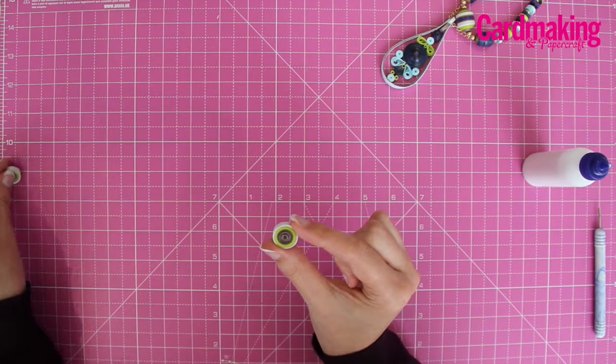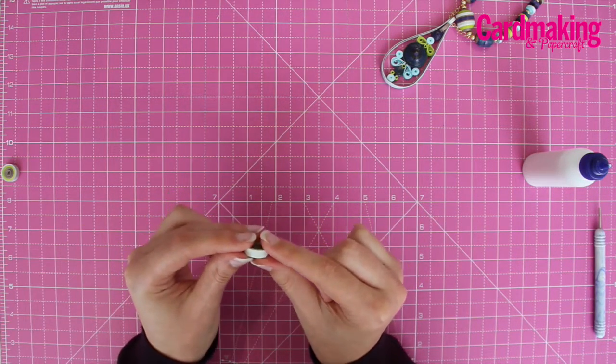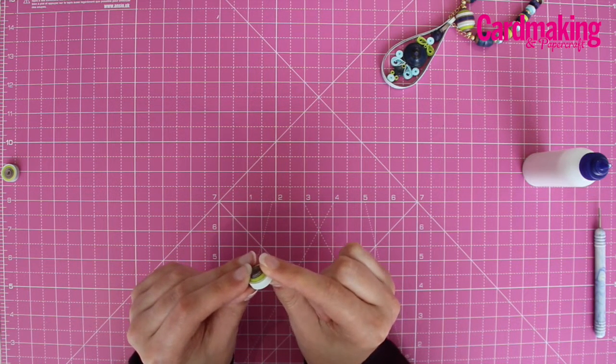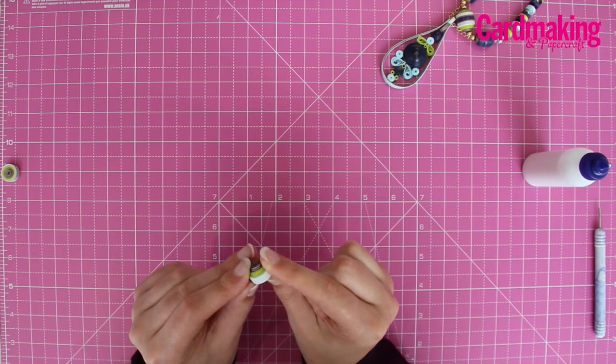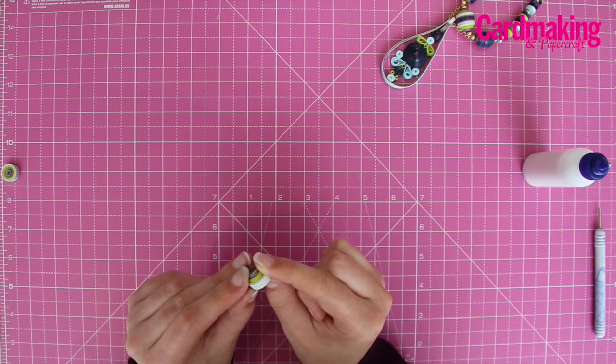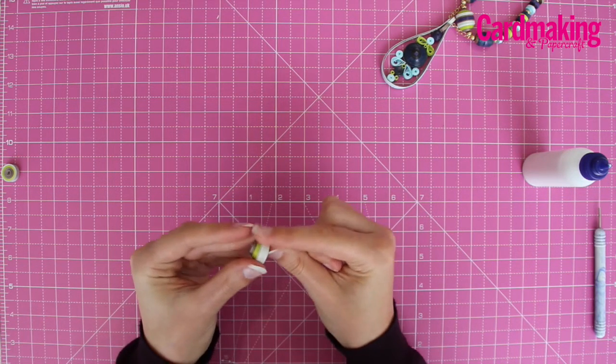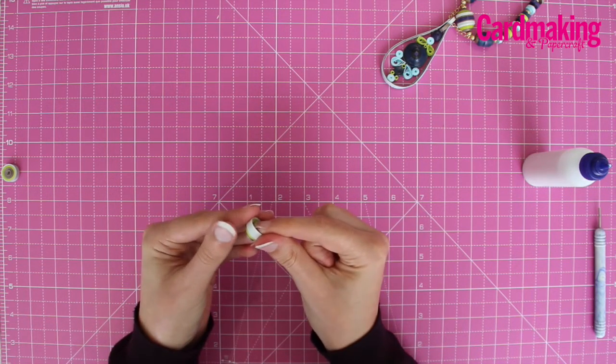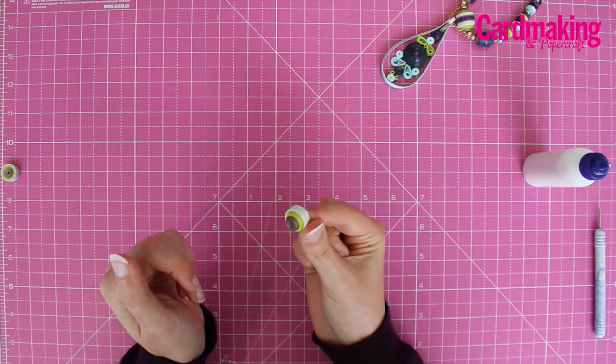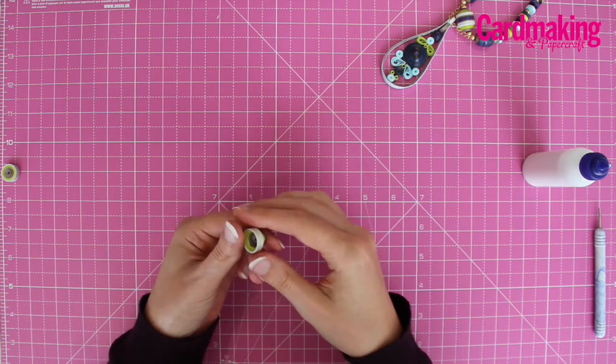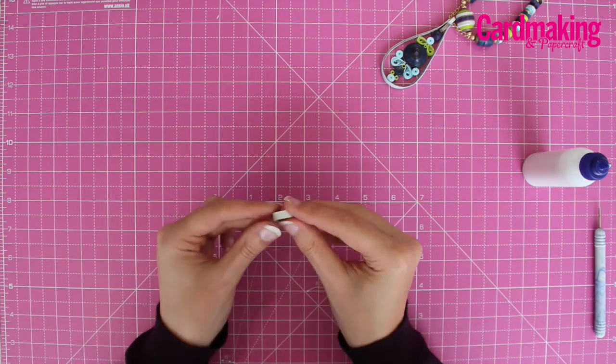Use your thumb and first finger to push gently onto the coil to make it into a dome shape. Repeat that with the other coil.